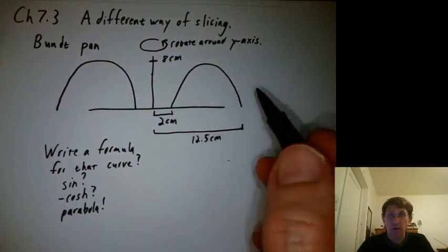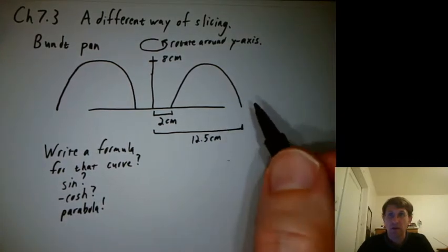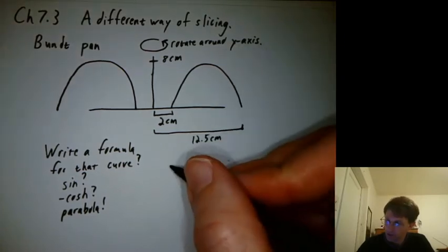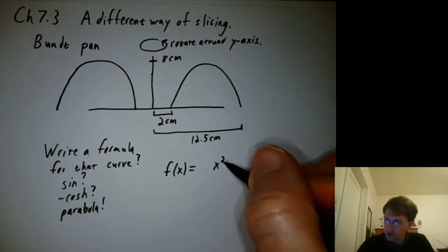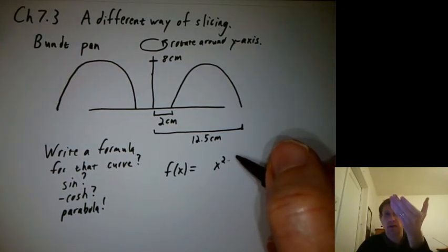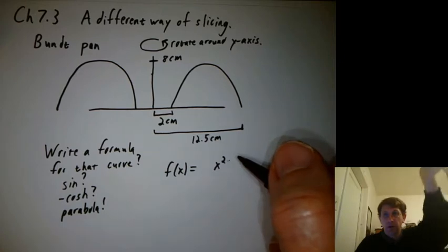That seems like a good first approximation. So what would a good parabola formula be here? Let's see. Someone once suggested f of x equals, well, they started with x squared. Seems reasonable, but that's a right side up parabola.